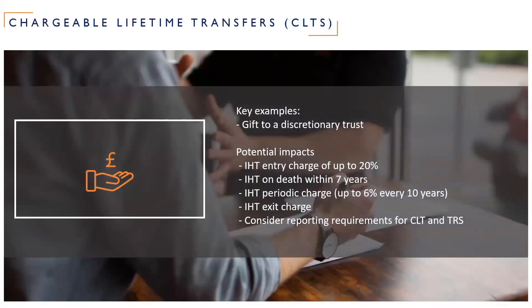The final type is chargeable lifetime transfers. The main example is a gift to a discretionary trust — a trust where the trustees have discretion within a class as to who gets the benefits. There are a number of charges to inheritance tax with a chargeable lifetime transfer during life: there's an entry charge of up to 20% IHT on creation of the trust; death within seven years, just like a potentially exempt transfer, can create an inheritance tax liability; and there's also an ongoing periodic charge on a 10-year cycle, which can cause an IHT charge of up to 10% every 10 years, or proportionately if capital leaves the trust within the 10-year period. It's really important to consider the administration and reporting around creating gifts like this.